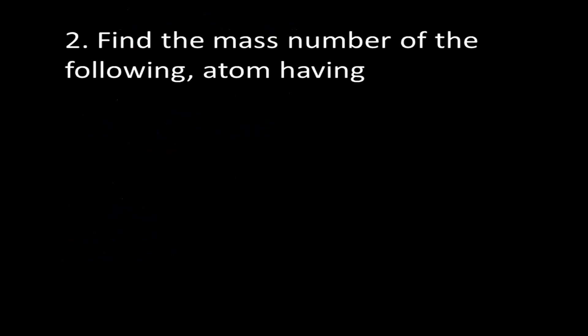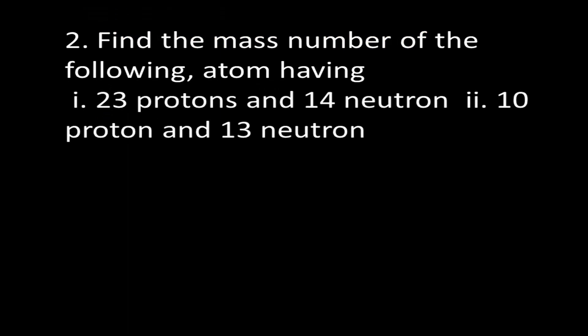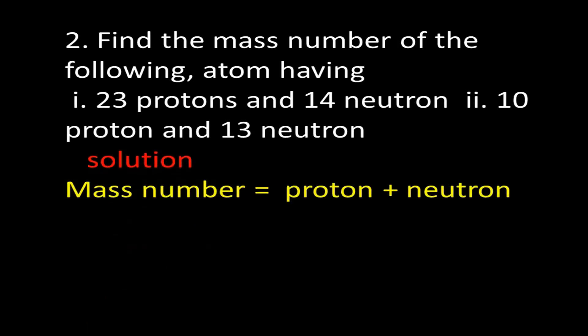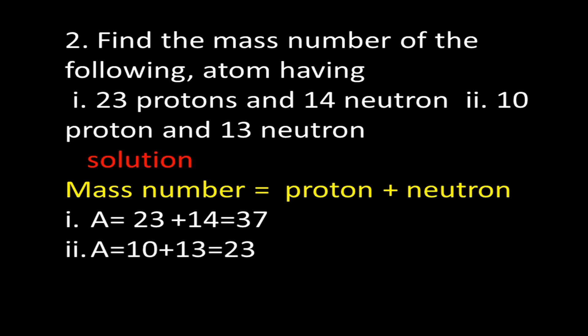Problem 2: Find the mass number of atoms with (i) 23 protons and 14 neutrons, and (ii) 10 protons and 13 neutrons. Solution: Mass number = proton number + neutron number. For (i): 23 + 14 = 37. For (ii): 10 + 13 = 23.